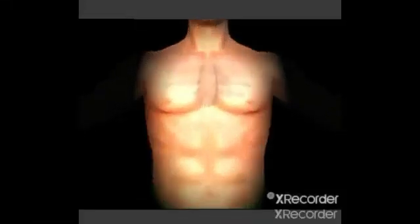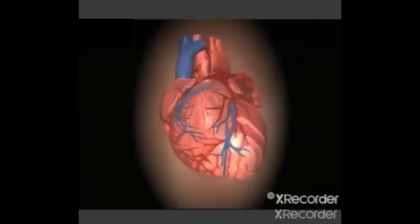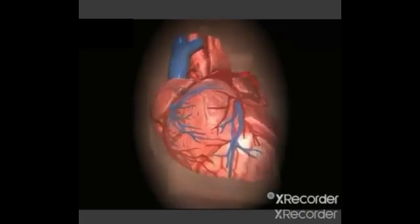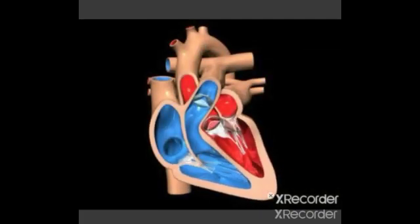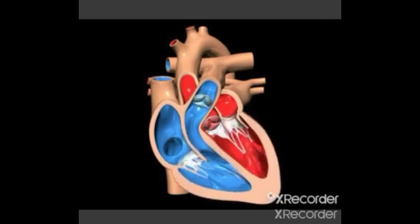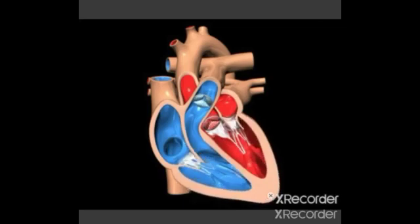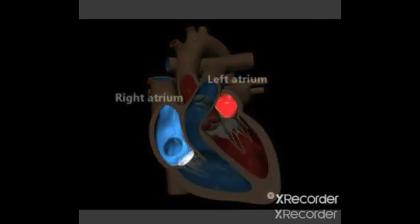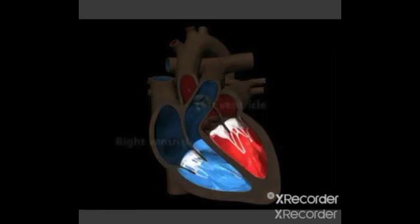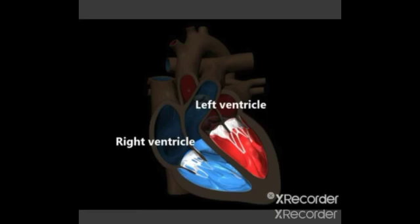Our heart is a muscular organ which is protected by the ribcage. Our heart is divided into four chambers: upper chambers and lower chambers. The two upper chambers are known as right atrium and left atrium, also called auricles. The two lower chambers are known as right ventricle and left ventricle.